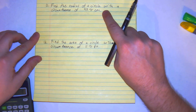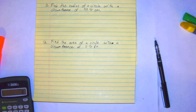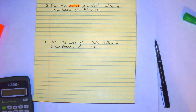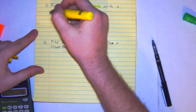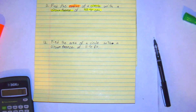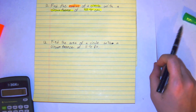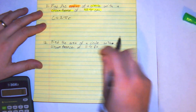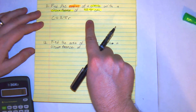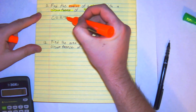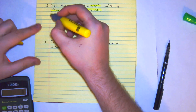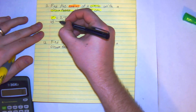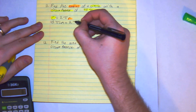Number 11: find the radius of a circle with a circumference of 45 pi centimeters. So we're trying to find a radius. The way we're going to approach this is we need to use C equals 2 pi r. We're going to use this formula over C equals diameter times pi, because we're looking for the radius. So we plug in everything we know: 45 pi centimeters is equal to 2 pi r.